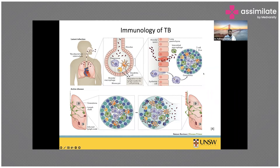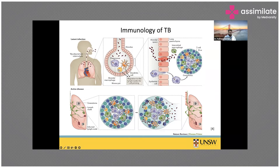If immune status alters — due to aging, HIV, diabetes, smoking, indoor air pollution, or malnutrition — the TB bacilli can breach the granuloma shell, re-enter the lung parenchyma and blood supply, travel into the bronchus, and be expelled when you cough, spreading TB from one person to another. This diagram powerfully illustrates the immunology of TB.